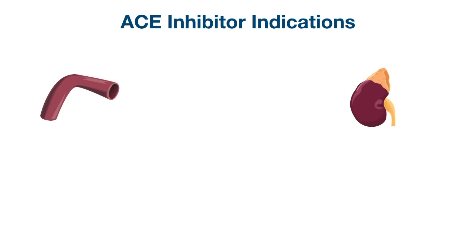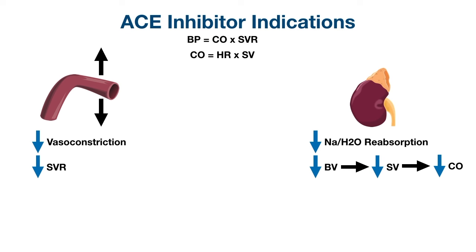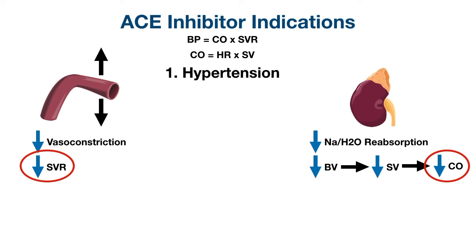Now let's go over the indications for ACE inhibitors — this should be straightforward now that we know the mechanism of action. ACE inhibitors decrease vasoconstriction, reducing systemic vascular resistance, and decrease sodium and water reabsorption, reducing blood volume, stroke volume, and cardiac output. Since blood pressure equals cardiac output times systemic vascular resistance, decreasing both leads to decreased blood pressure — exactly why ACE inhibitors are used to treat hypertension.